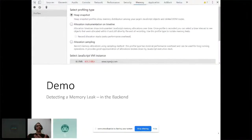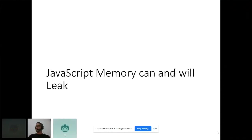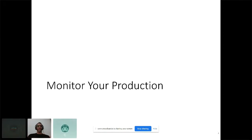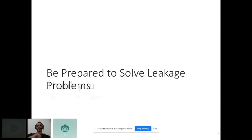That was the example of detecting memory leaks in the back end. You can also explore libraries like heapdump for more detailed analysis after watching this session. To conclude: JavaScript memory can and will leak eventually. Be aware of the pitfalls we discussed, and please monitor your production environment so you find memory leaks as soon as possible. The customer from my opening story had a critical application used by fire departments — you don't want a fire department application to crash during an emergency. Be prepared to solve leakage problems quickly.